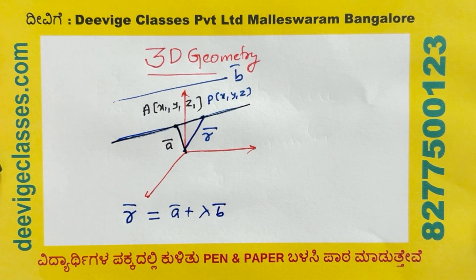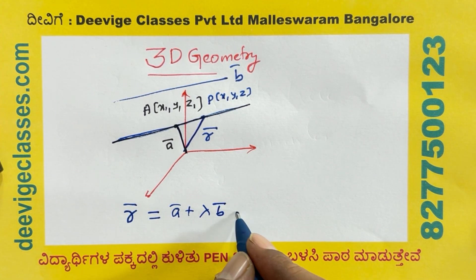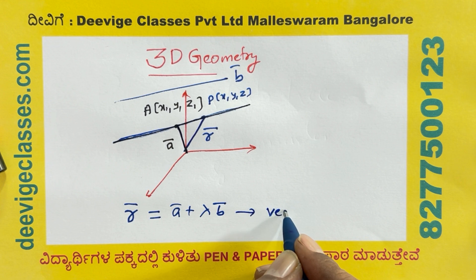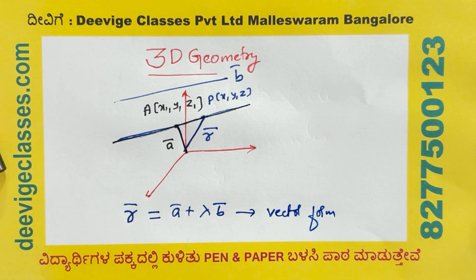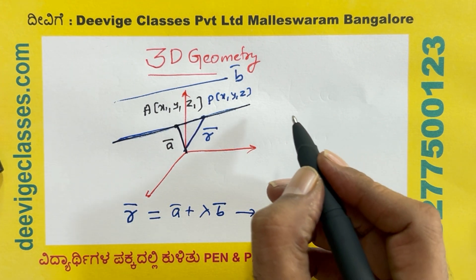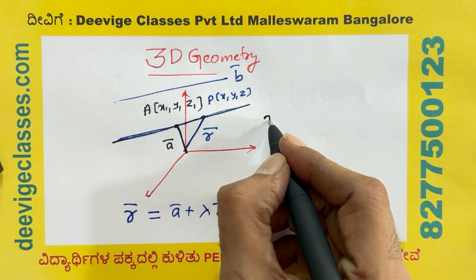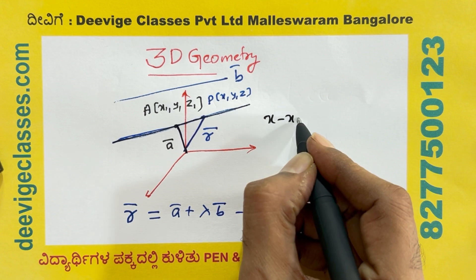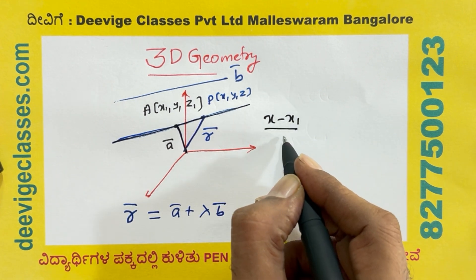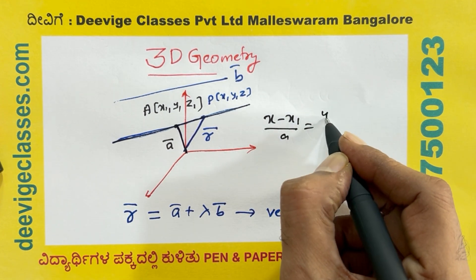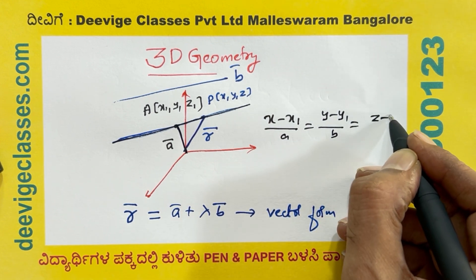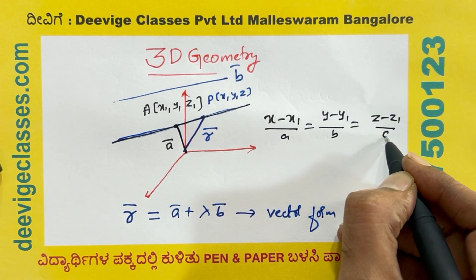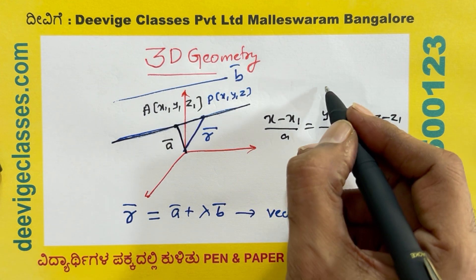We are going to do the vector form, and simplify. The Cartesian form is: x minus x1 over A equals y minus y1 over B equals z minus z1 over C. So this is called the Cartesian form.